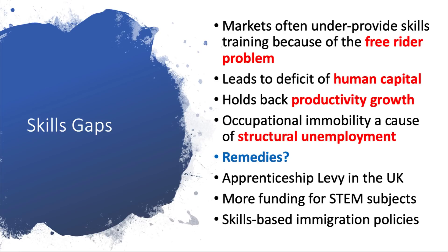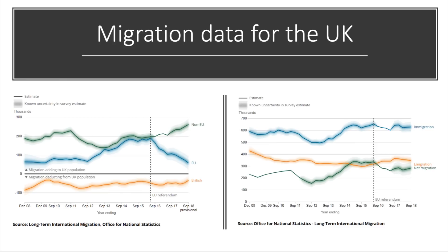How best to address skills gaps in the UK? The government has brought in the new apprenticeship levy. Some people argue for increased funding for STEM subjects — science, technology, English and maths — and others point to the need for a skills-based immigration policy to attract skilled workers at different levels. Migration is an important aspect of the skills gap.